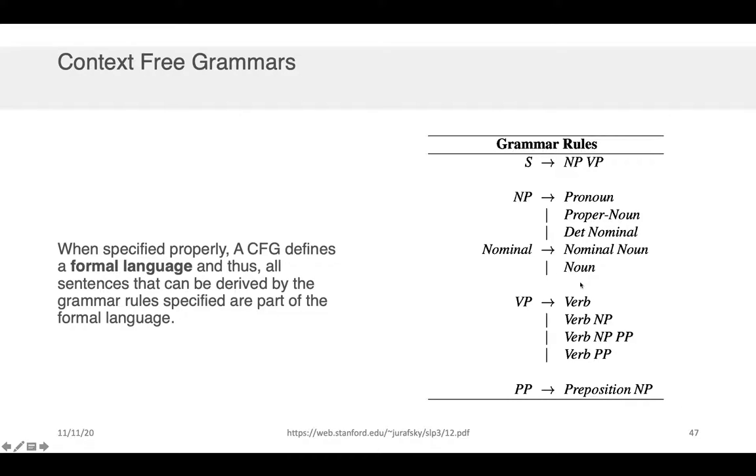and as we saw before a nominal is a nominal followed by a noun or it's just a noun and a verb phrase is either a verb, a verb followed by a noun phrase, a verb followed by a noun phrase followed by a prepositional phrase or a verb phrase followed by a prepositional phrase and a prepositional phrase is just a preposition and a noun phrase. Now note here that I didn't include the rules of the lexicon. Those are usually specified separately because they can get quite long and again the lexicon is just how we map from the terminating tokens the raw words in your text to their parts of speech categories.